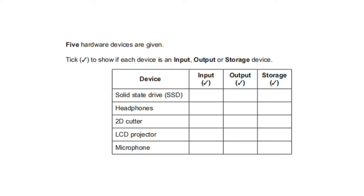Five hardware devices — tick whether each is an input, output, or storage device. SSD — storage device. Headphone — output device. 2D cutter — output device. LCD projector — output device. Microphone — input device.